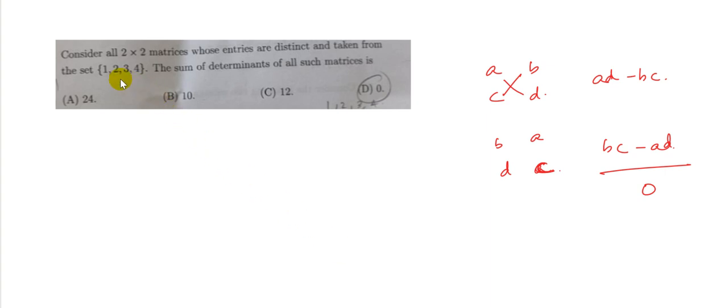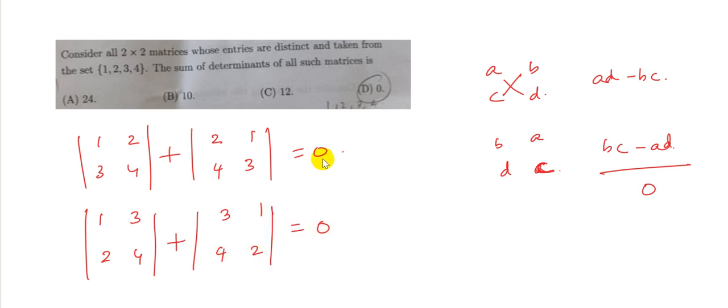So if I go with all the possible combinations like 1, 2, 3, 4, then the corresponding swap would be 3, 4, 1, 2, so this would give me this plus this would give me 0. And similarly I can do 1, 3, 2, 4 plus swapping the diagonals I will get 2, 4, 1, 3, this will give me 0. So eventually if I take all the possible combinations and add them up the total sum will be 0.